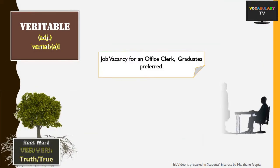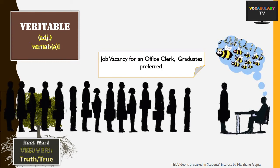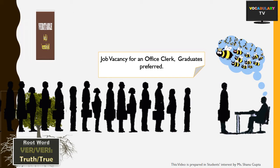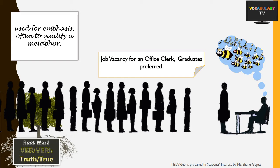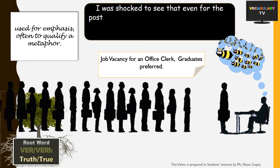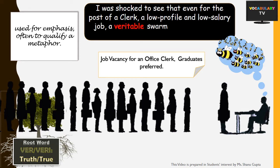Next word is 'veritable,' which is a very important and common one. Like the word 'very,' veritable is an adjective used to emphasize that something is actual or true and not false or imaginary. The beauty of this word is that it mostly qualifies a metaphor. For example: 'I was shocked to see that even for the post of a clerk, a veritable swarm of graduates had turned up for the interview.' Here 'swarm,' usually used for bees, implies a huge number of graduates — far more impactful than simply saying 'a huge crowd.'